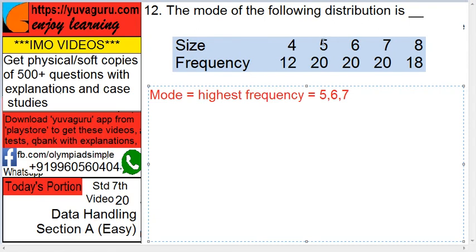So which has the highest frequency? 5, 6, and 7. So the mode is 3 — there are 3 modes over here: 5, 6, and 7. Remember, there can be many modes in a distribution.